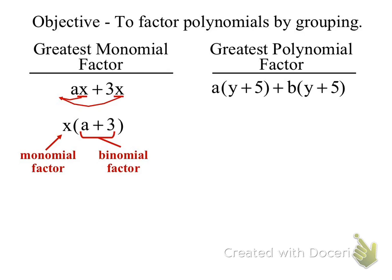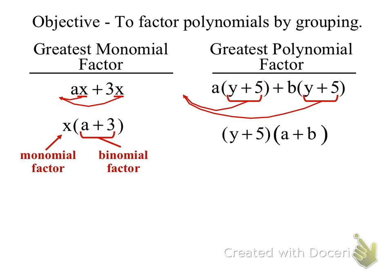So when given something like this, what can I factor out? Eitan: Y plus 5. This is a binomial factor. If I factor out a Y plus 5 out of both terms, what's left? What's left is the A plus B. Does that make sense? Y plus 5 was a binomial factor, and the other factor is also a binomial factor.